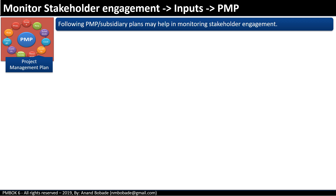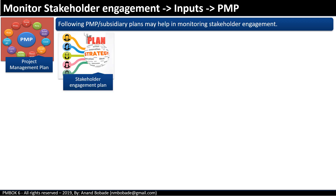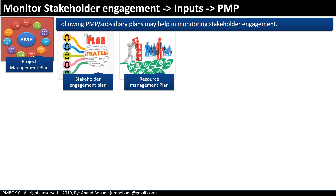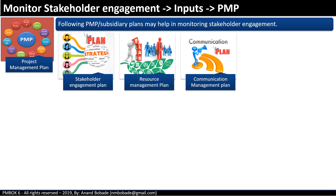Under the project management plan, the stakeholder engagement plan guides the project manager on how to monitor stakeholders. The resource management plan helps understand human resources and project team member details. The communication management plan provides strategies to communicate with stakeholders and helps understand their communication needs.